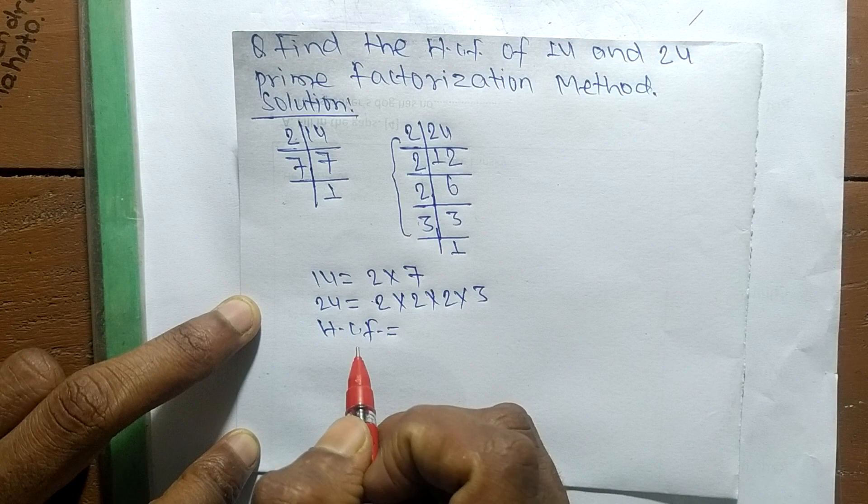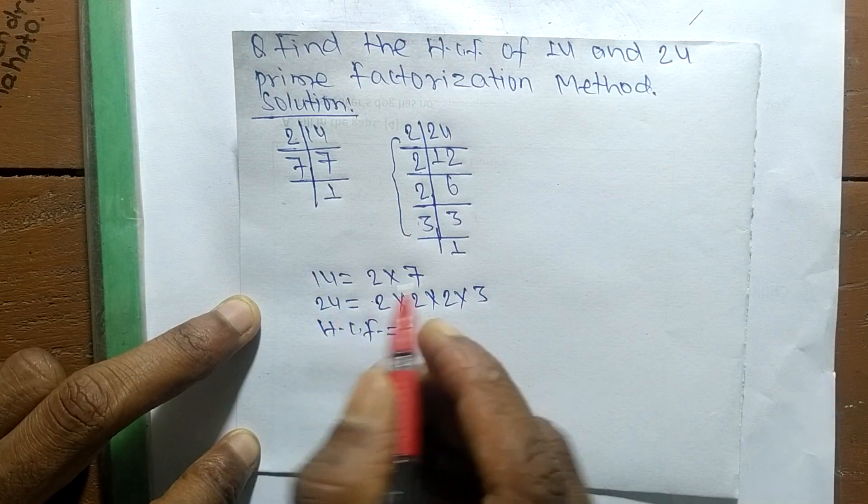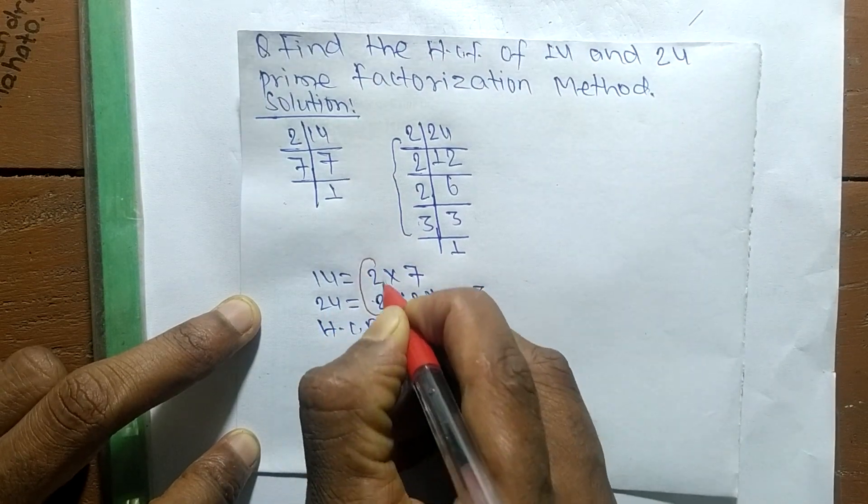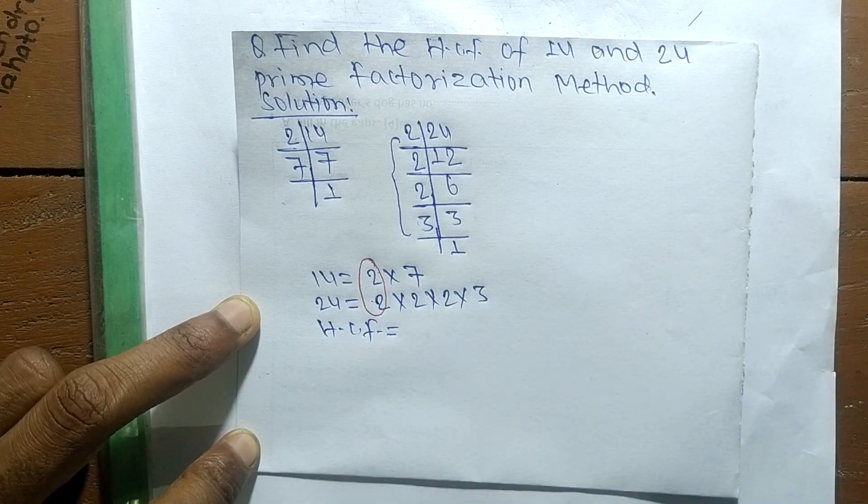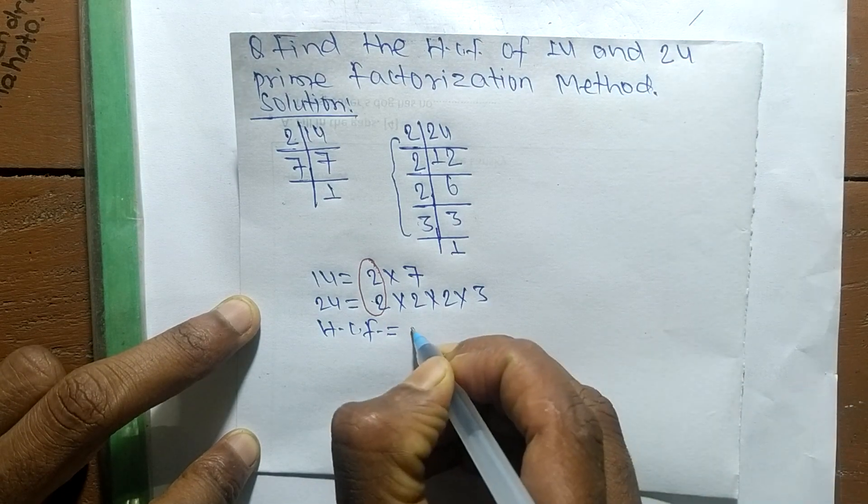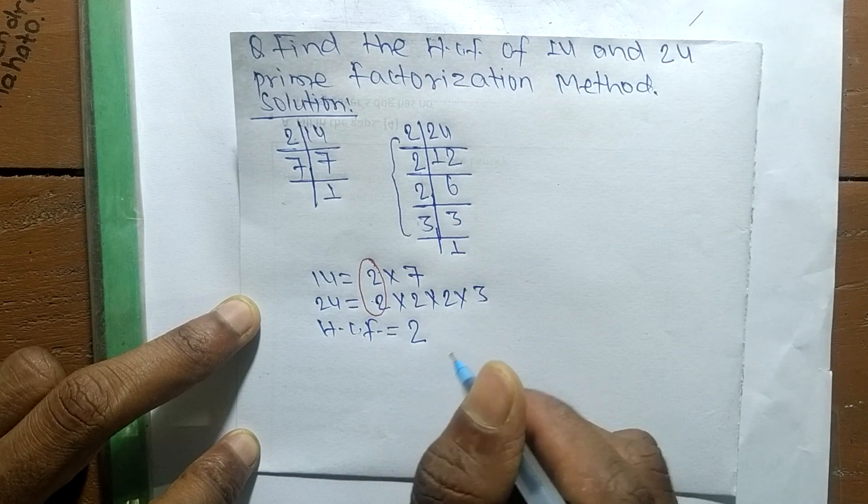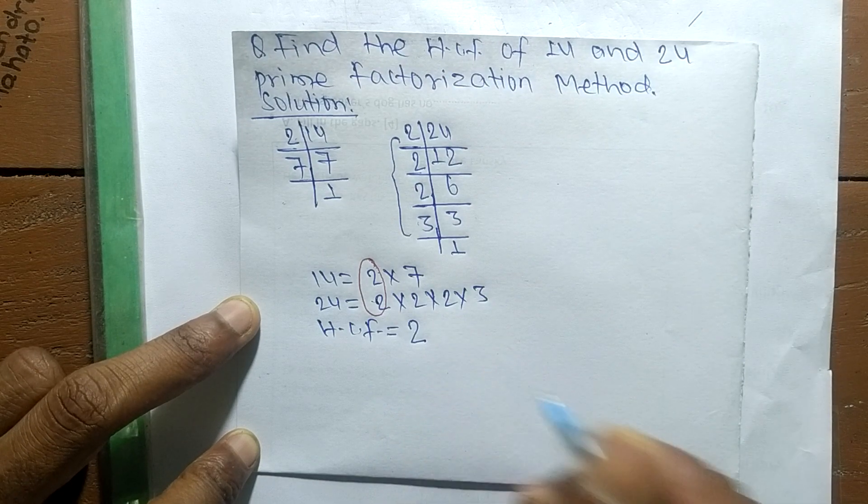The first common factor here is 2, so its HCF is equal to 2. So this much for today and thanks for watching.